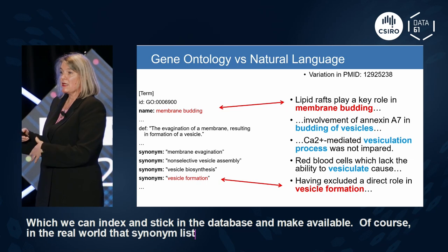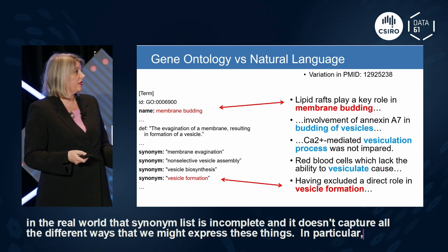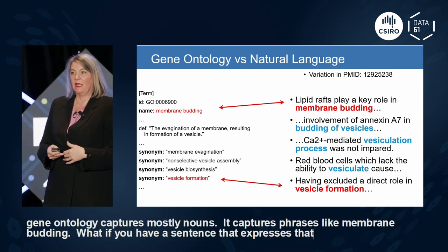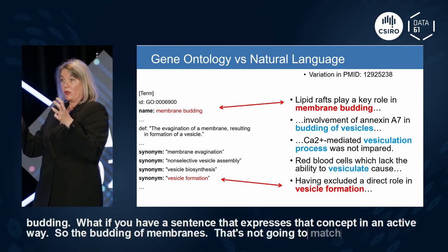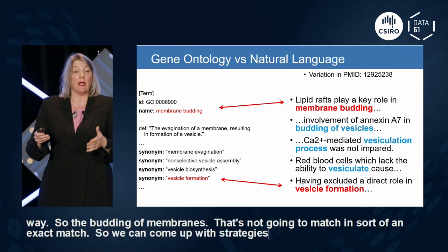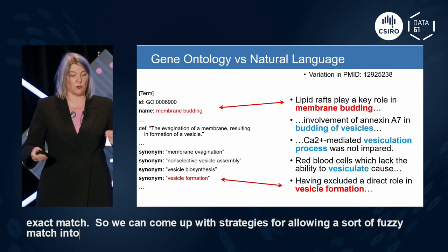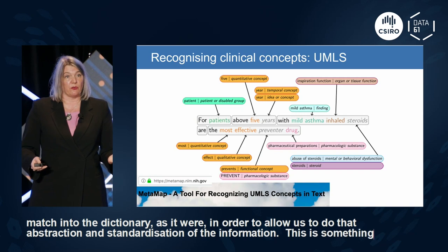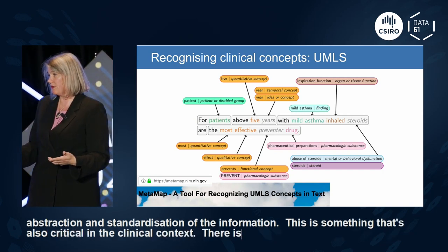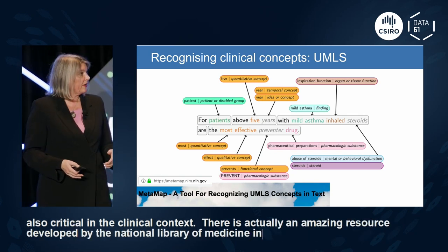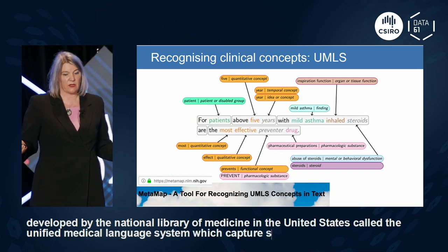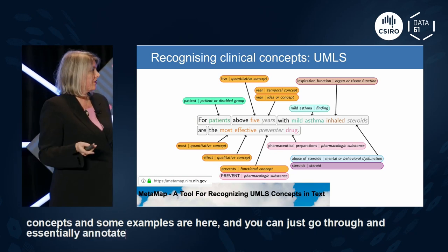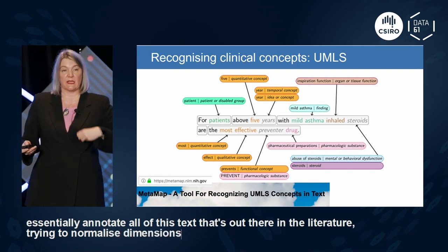Of course that synonym list is incomplete — it doesn't capture all the different ways concepts are expressed, and the Gene Ontology captures mostly nouns. If a sentence expresses the concept actively, like 'the budding of membranes,' that won't match an exact search. We can develop strategies for fuzzy matching into the dictionary to allow that abstraction and standardization. This is also critical in the clinical context — there's an amazing resource from the National Library of Medicine called the Unified Medical Language System, which captures a huge amount of clinical concepts for annotating the literature.